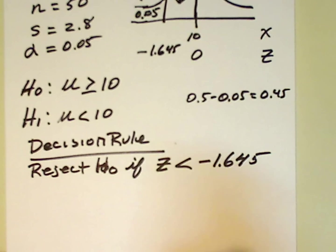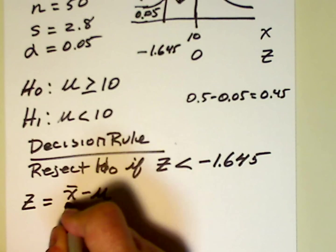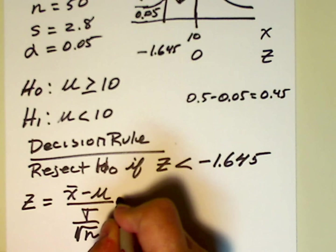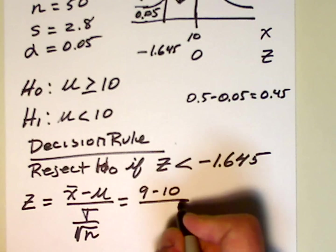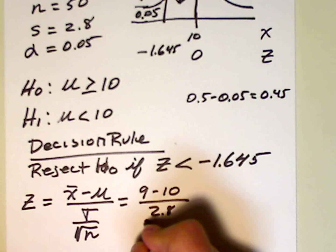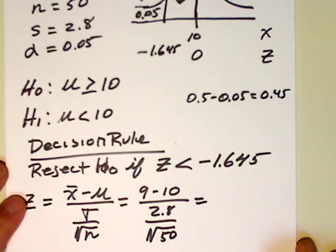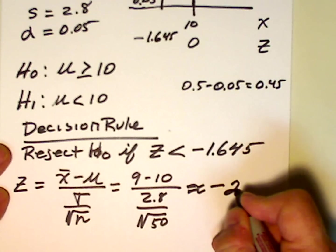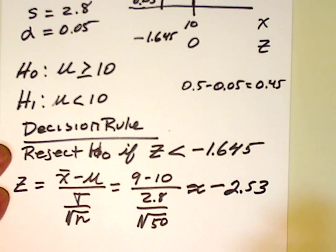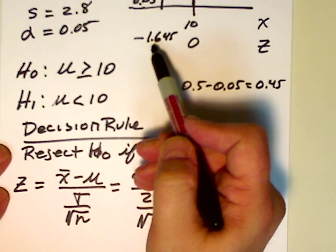Now we need to calculate our test statistic — that's our z statistic: x-bar minus mu, over sigma over the square root of n. So we have x-bar of 9, minus 10, over the standard deviation of 2.8, divided by the square root of 50. This works out to be approximately negative 2.53. That's our z-value, and negative 2.53 is clearly way to the left of negative 1.645.